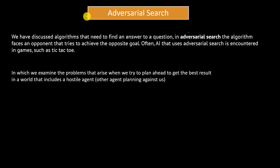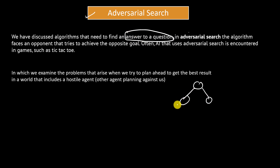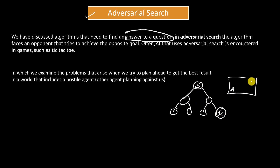Up till now we have discussed algorithms that need to find an answer to a particular question. We have a state space, search space, a starting point and an ending point G, and we are just trying to find out the path to reach this particular goal. In the maze example also, S is the starting point and we are trying to find the path to reach point B. In uninformed and informed search techniques, we don't have an opponent — we don't have any other player or agent playing against us.